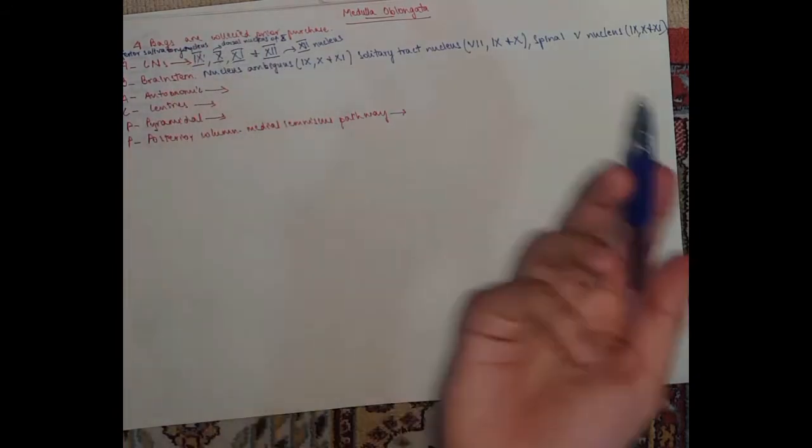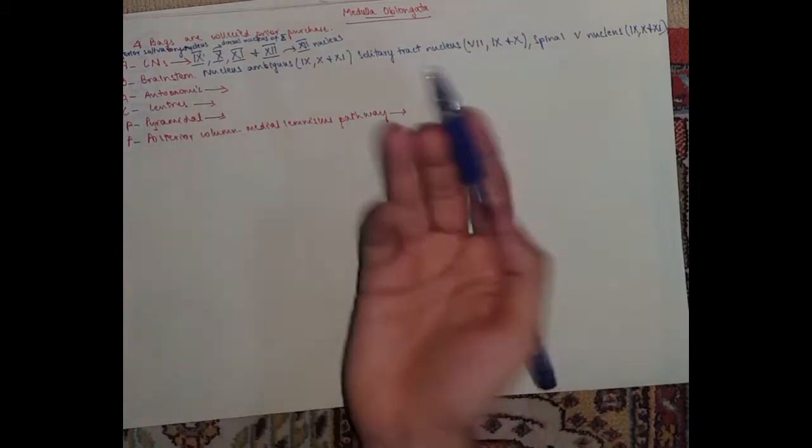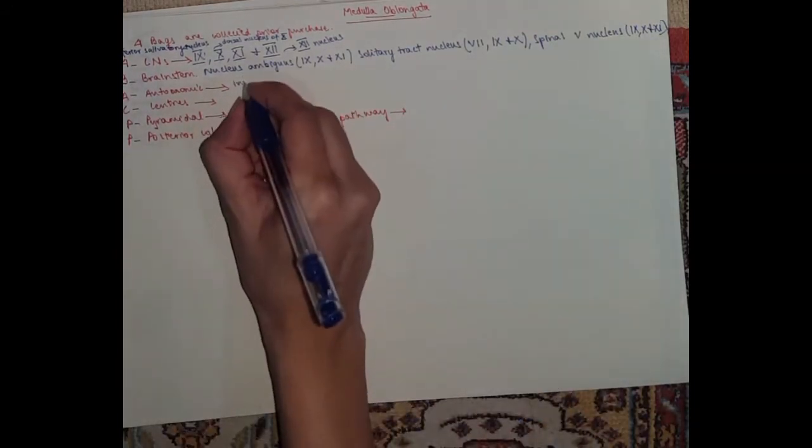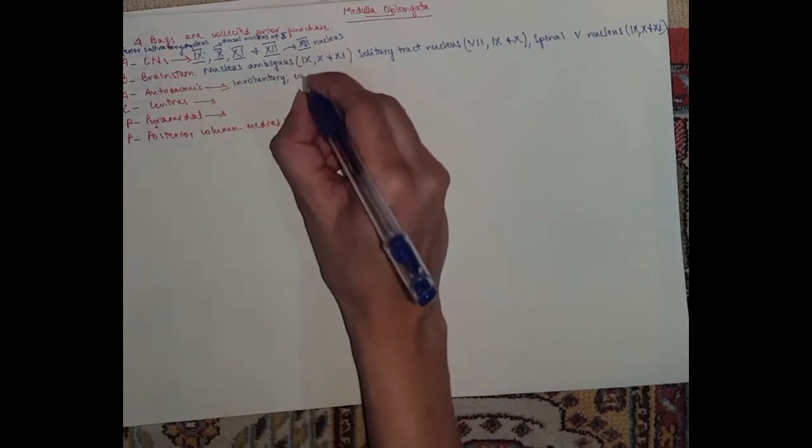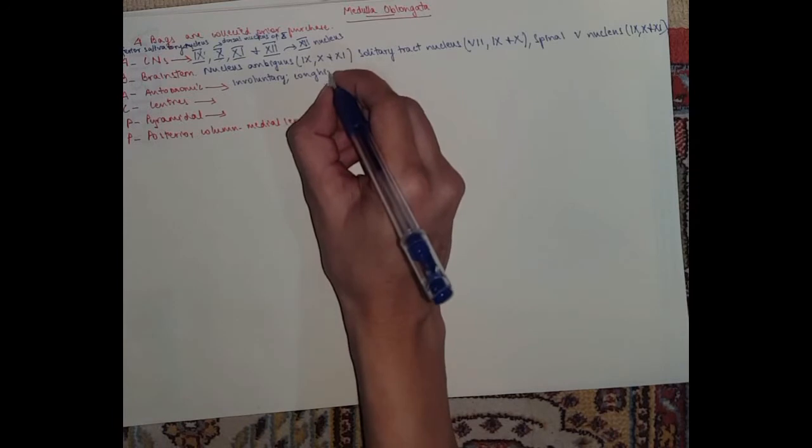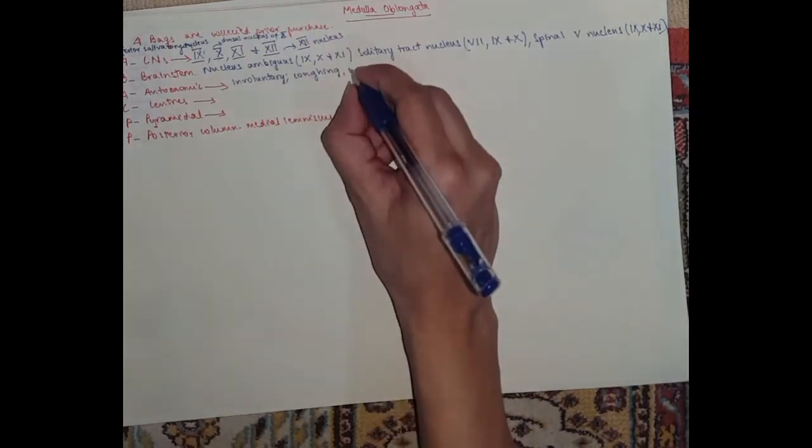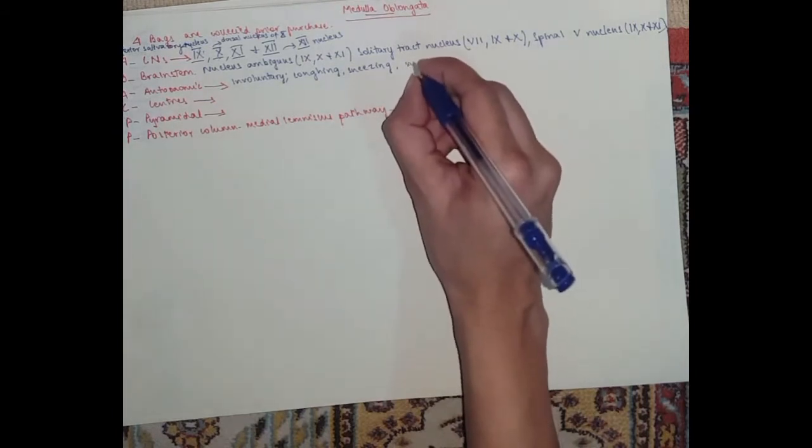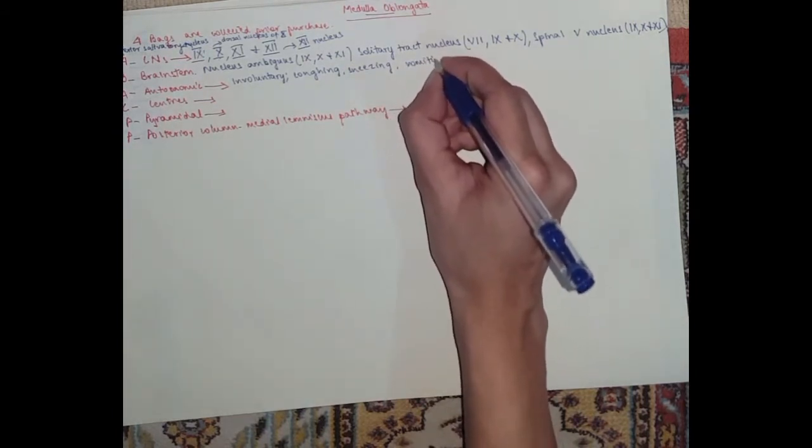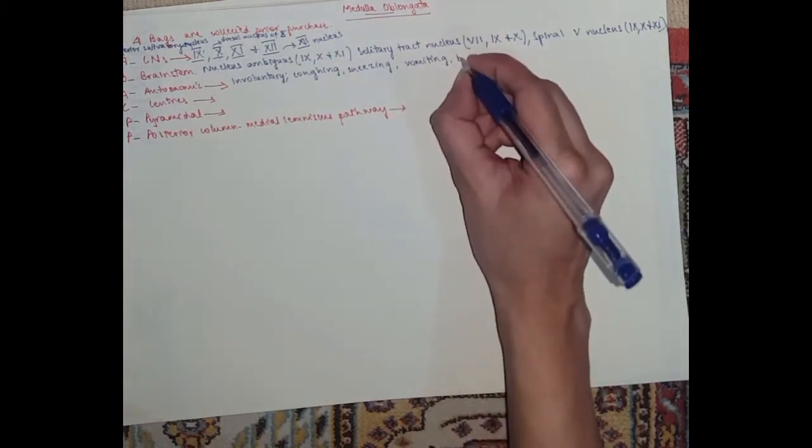Brainstem, I told you, no need of explanation. Autonomic is the function, so it's involuntary functions. What can you think of when you think of involuntary? So you've got coughing, sneezing, vomiting, breathing, etc.